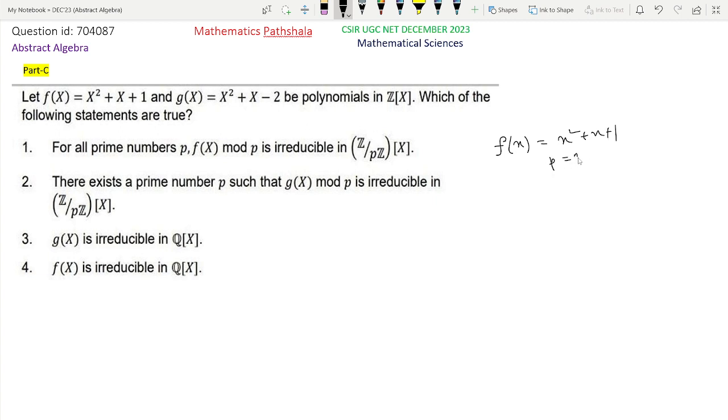Just take here p = 3. Clearly, it is seen that if we take p = 3, that is Z/3Z[x], that is Z₃[x] actually. Clearly f(1) = 1 + 1 + 1, that is congruent to 3, equal to 0. So clearly x = 1 is a root of this polynomial, and hence as Z₃ is a field and this is a polynomial of degree 2.